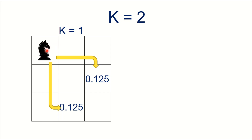Now, when the Knight moves — that is when k equal to 1 — out of 8 possibilities, 2 retain the Knight within the board, and the resultant probability is 1/8, that is 0.125 for each of these 2 positions, which are the 2 positions that result in the Knight being inside the board.